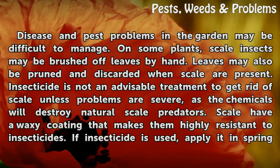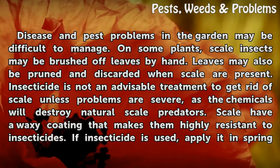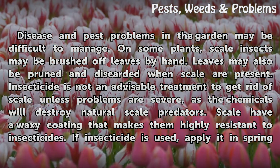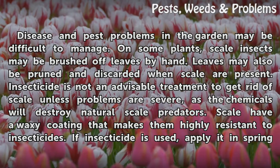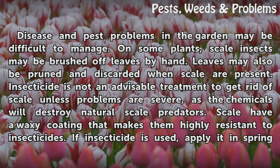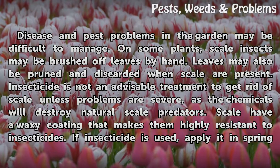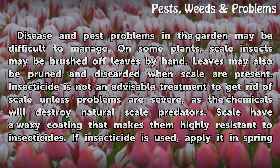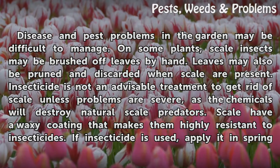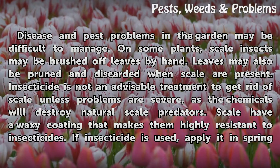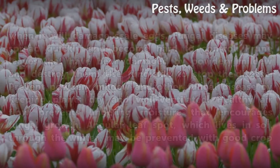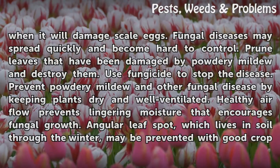Disease and pest problems in the garden may be difficult to manage. On some plants, scale insects may be brushed off leaves by hand. Leaves may also be pruned and discarded when scale are present. Insecticide is not an advisable treatment to get rid of scale unless problems are severe, as the chemicals will destroy natural scale predators. Scale have a waxy coating that makes them highly resistant to insecticides. If insecticide is used, apply it in spring when it will damage scale eggs.